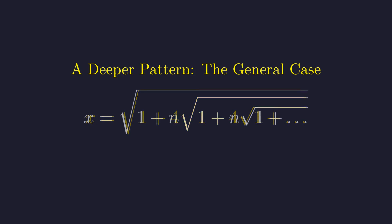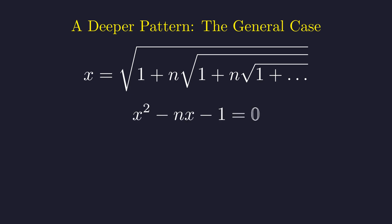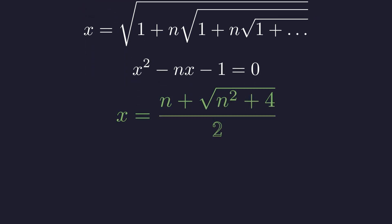Using exactly the same self-similarity trick as before, we get this general quadratic for any positive n. And solving for the positive root gives us this elegant universal formula.